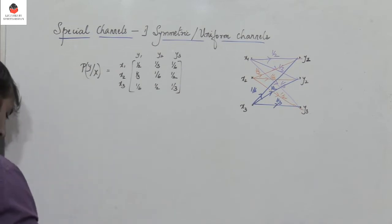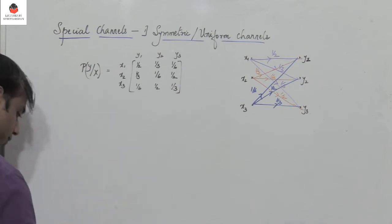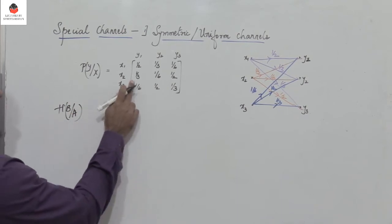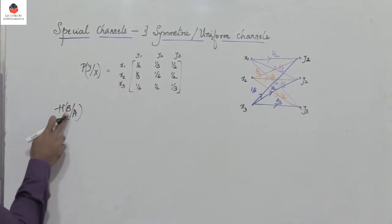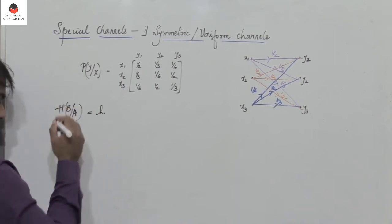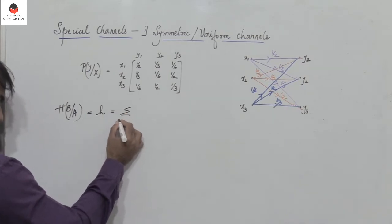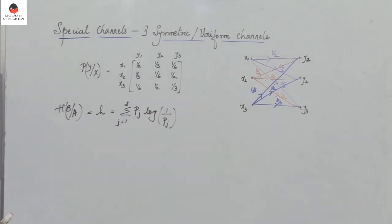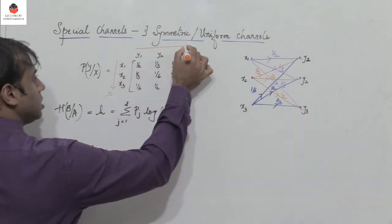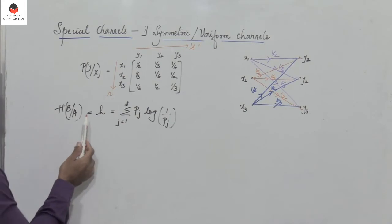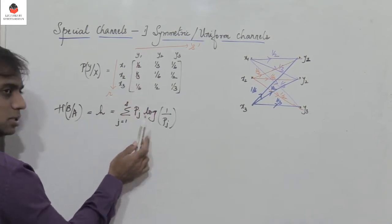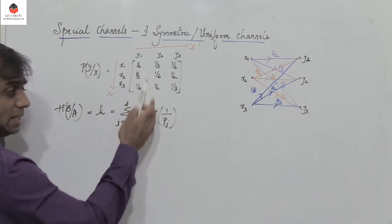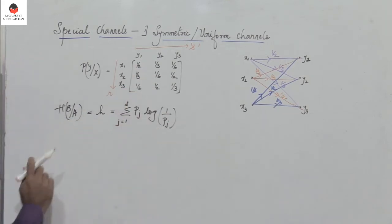Now, how do we calculate the channel capacity? To find the channel capacity we have to find h of b given a. Since the elements of each row remain the same, h of b given a is a constant — let's call that h — and it equals the summation from j equal to 1 to s of p(j) log(1/p(j)), where there are r number of inputs and s number of output symbols.